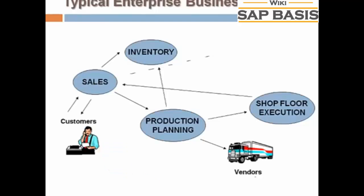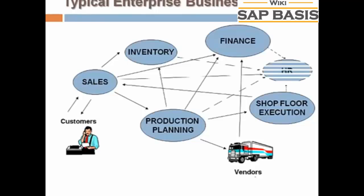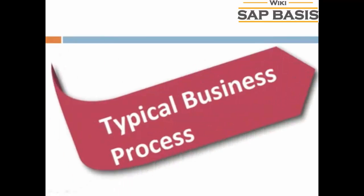The sales team updates the finance department with revenue generated by the sale of the product. The production planning team updates the finance department with payments to be made to different vendors for raw materials. All departments approach HR for any human resource-related issue. That is the typical business process of any manufacturing company.